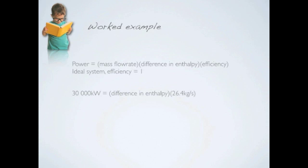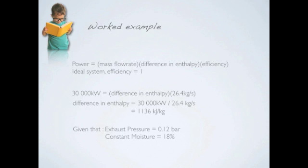Given that the power is 30,000 kilowatts and the mass flow rate is 26.4 kg per second, we can use the equation for power to find the difference in enthalpy, which turns out to be 1,136 kilojoules per kg. We also know that the exhaust pressure is 0.12 bars and the constant moisture is 18%.